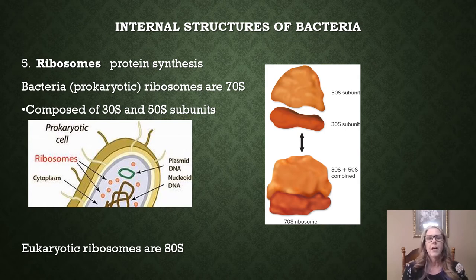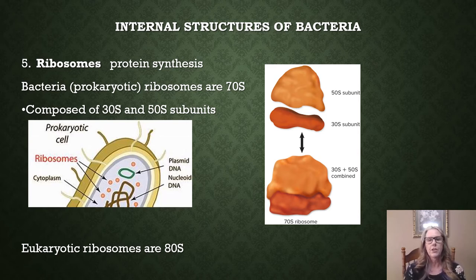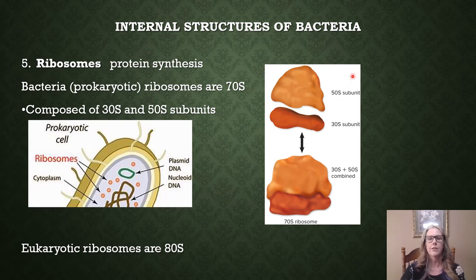There are different types of ribosomes based on the type of organism or type of cell. Bacteria are prokaryotes, and prokaryotes have ribosomes that are called 70S. When the large and small subunits are together, they're referred to as a 70S ribosome. If we break them apart, those subunits are a 30S and a 50S subunit, and when they come together they are a 70S.